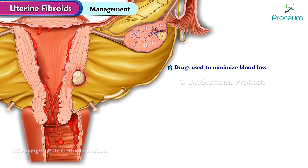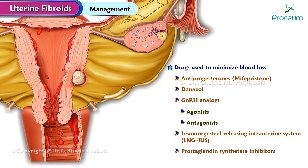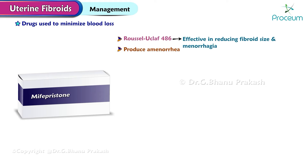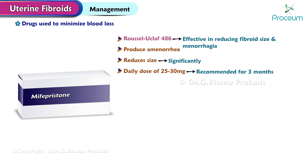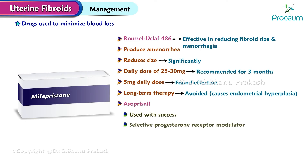Drugs used to minimize blood loss: antiprogesterones, mifepristone, danazole, gonadotropin-releasing hormone analogs (agonist and antagonist), levonorgestrel-releasing intrauterine system, and prostaglandin synthetase inhibitors. Mifepristone (RU-486) is very effective in reducing fibroid size and menorrhagia; it may produce amenorrhea. A daily dose of 25 to 50 mg is recommended for 3 months; a 5 mg daily dose is also found effective. Long-term therapy is avoided as it causes endometrial hyperplasia. Asoprisnil is used with success as a selective progesterone receptor modulator; it does not cause endometrial hyperplasia.